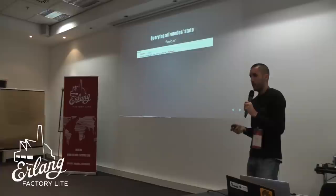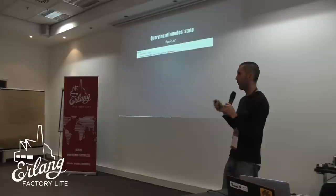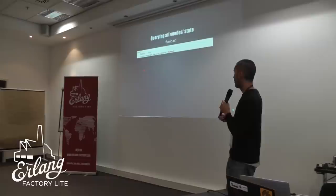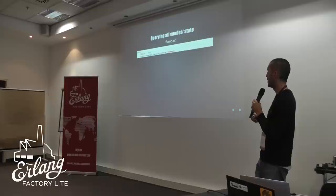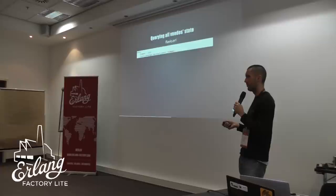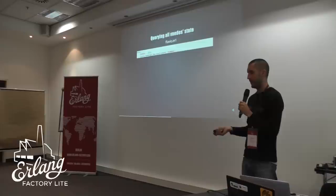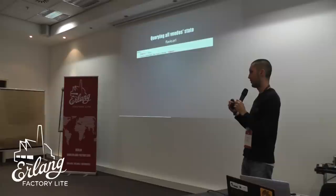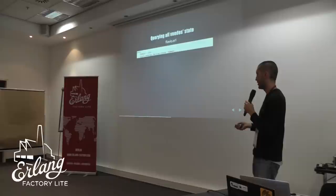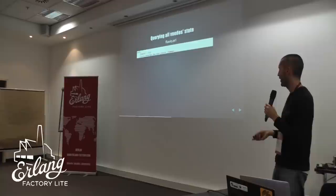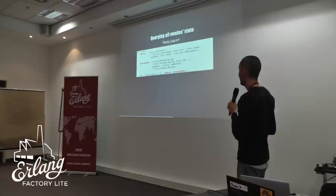Now that we have this ops count, we may want to ask all the VNodes how many operations they have handled. So on Flavio.erl we add a new function called stats, which will call coverage FSM start, stats, and a timeout. It's a finite state machine — I don't remember if it's provided by the template or I copy-paste it from project to project, but it just asks all the VNodes for a command and returns the results if they all reply before timeout.